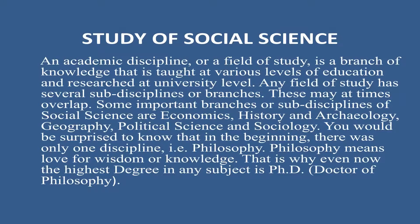An academic discipline or field of study is a branch of knowledge taught at various levels of education and researched at university level. Any field of study has several subdivisions or branches, which may at times overlap. Some important sub-disciplines of Social Sciences are Economics, History, Archaeology, Geography, Political Science and Sociology, all of which help you understand our society better.